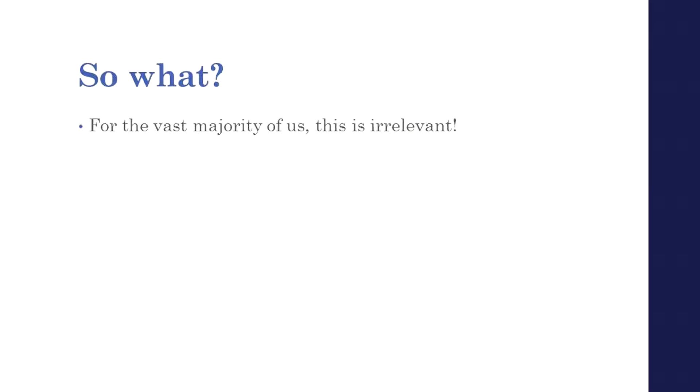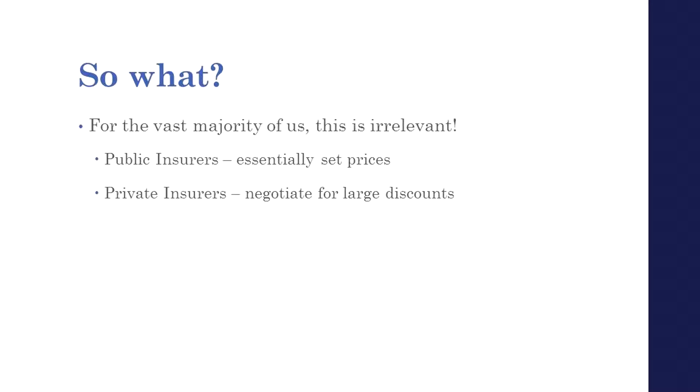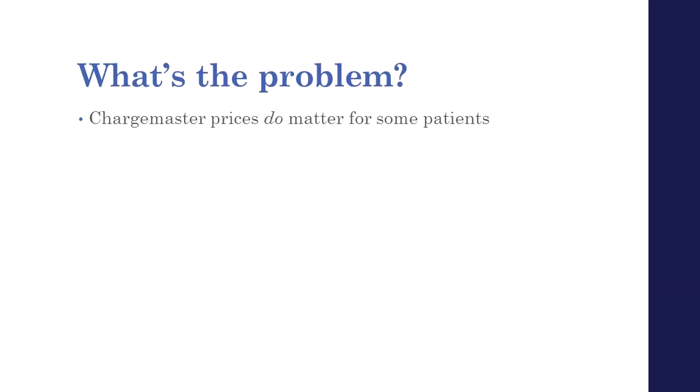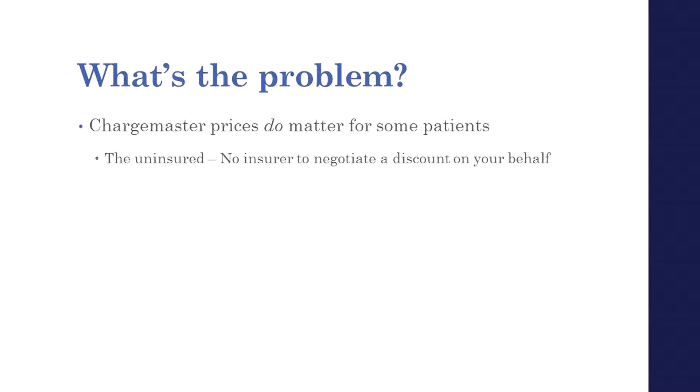It doesn't matter for most of us, but it does matter for some people. There are two main groups for whom list prices actually potentially matter. The first group — the one that's traditionally gotten the most attention — is the uninsured. If you're uninsured, remember that hospital bill: you had the $1,500, but then you had that key insurer-negotiated discount. Well, if you don't have an insurer to negotiate the discount on your behalf, you don't get that discount. Uninsured, for bizarre reasons, are one of the few groups exposed to these really high list prices.